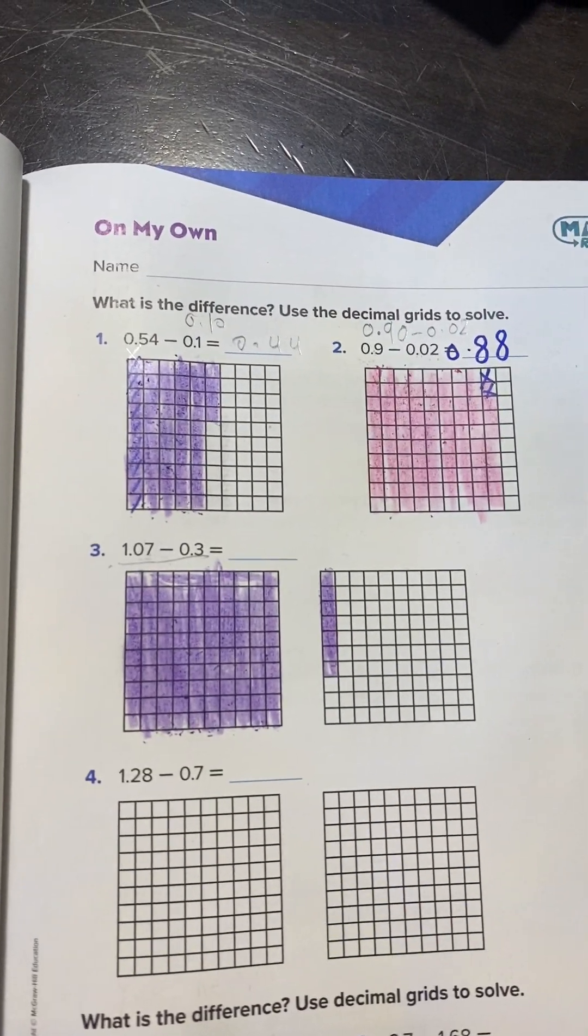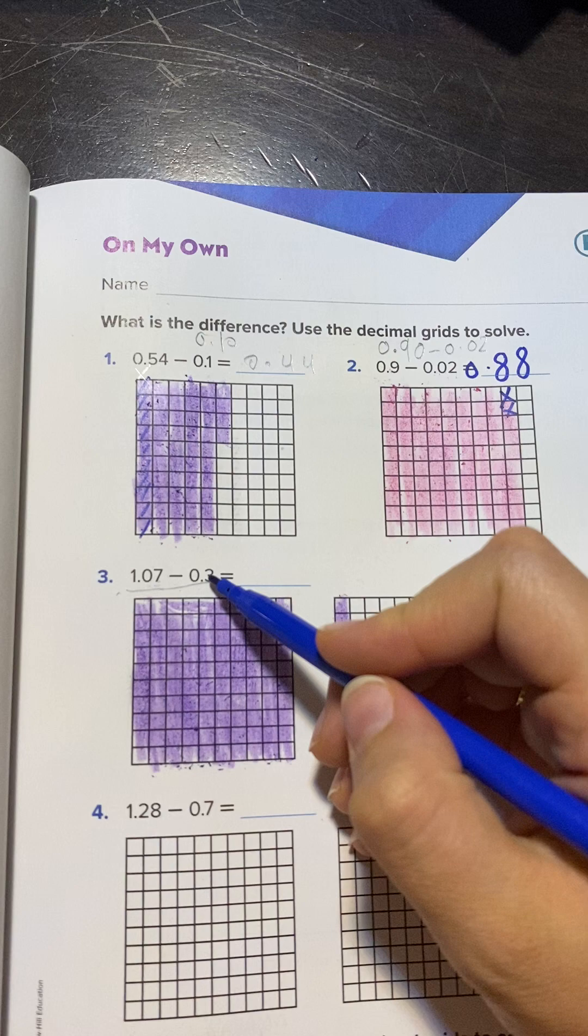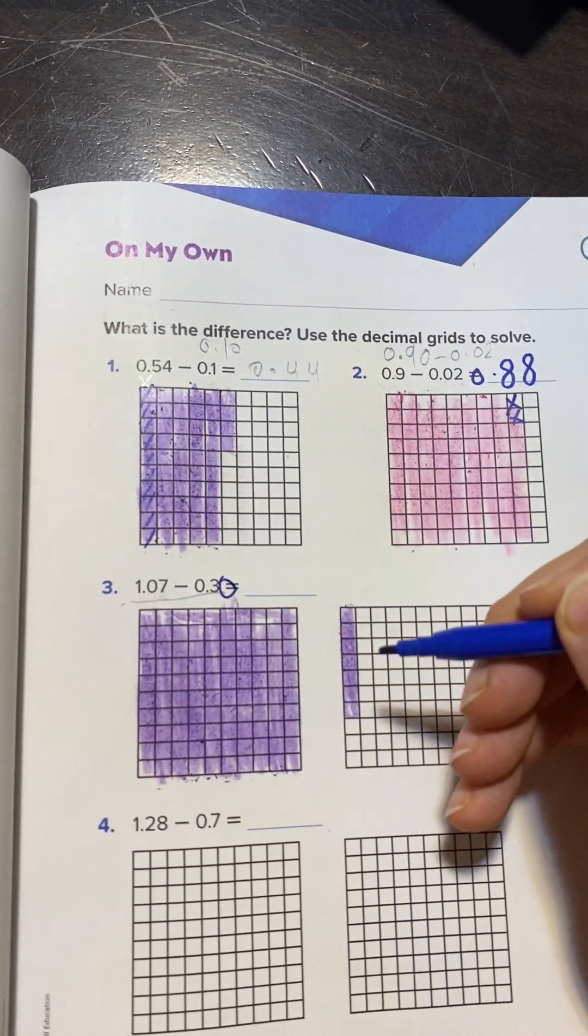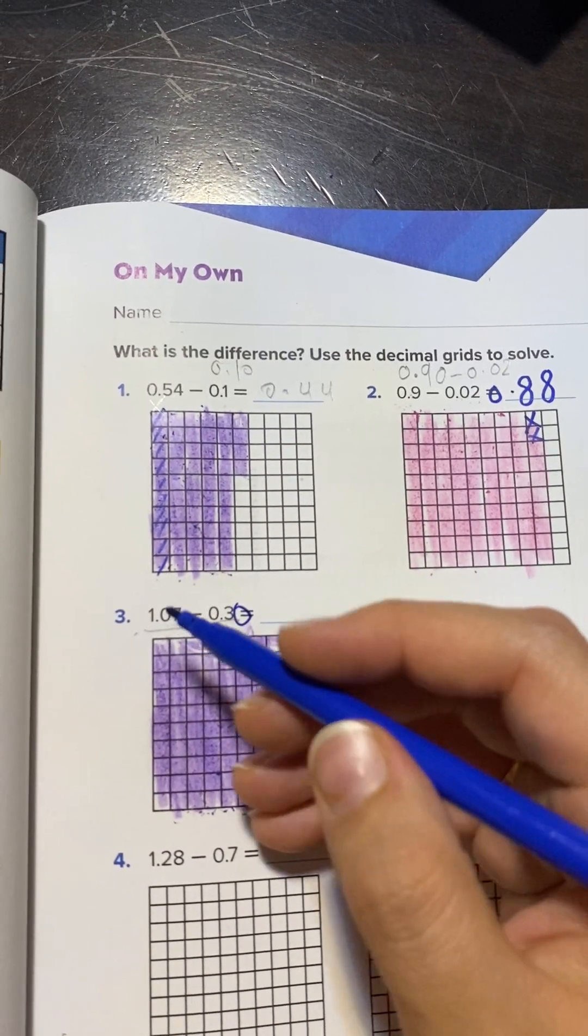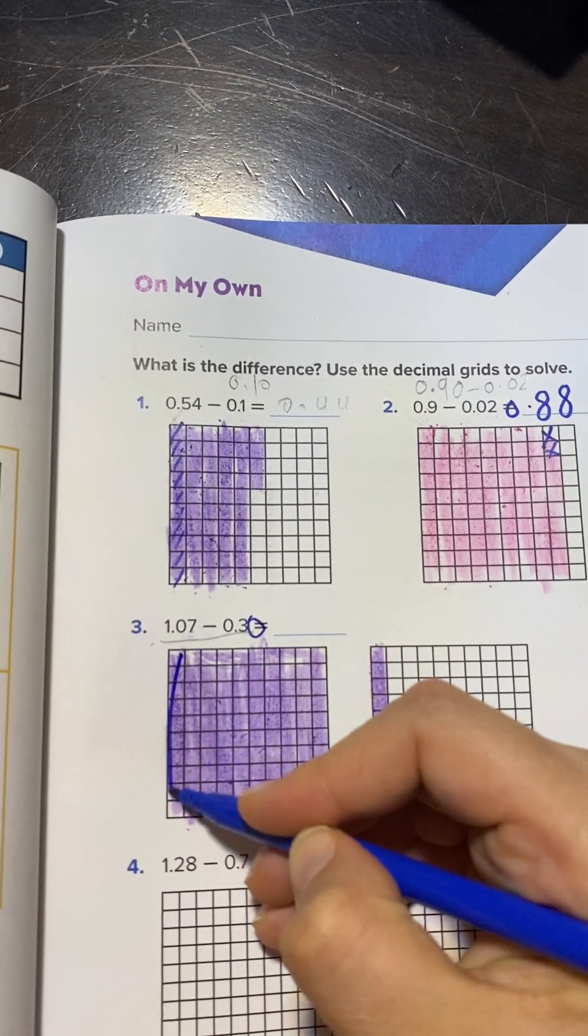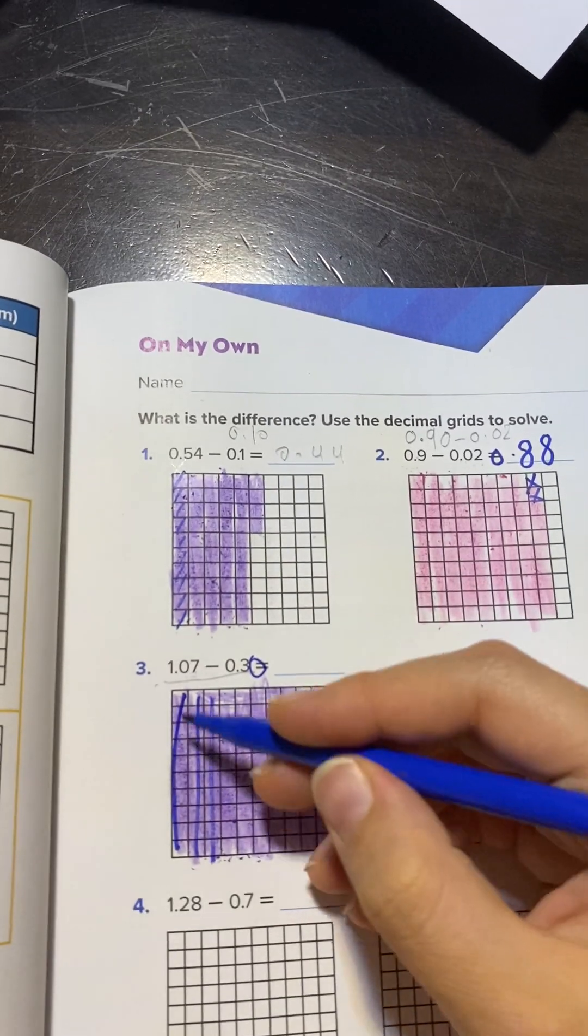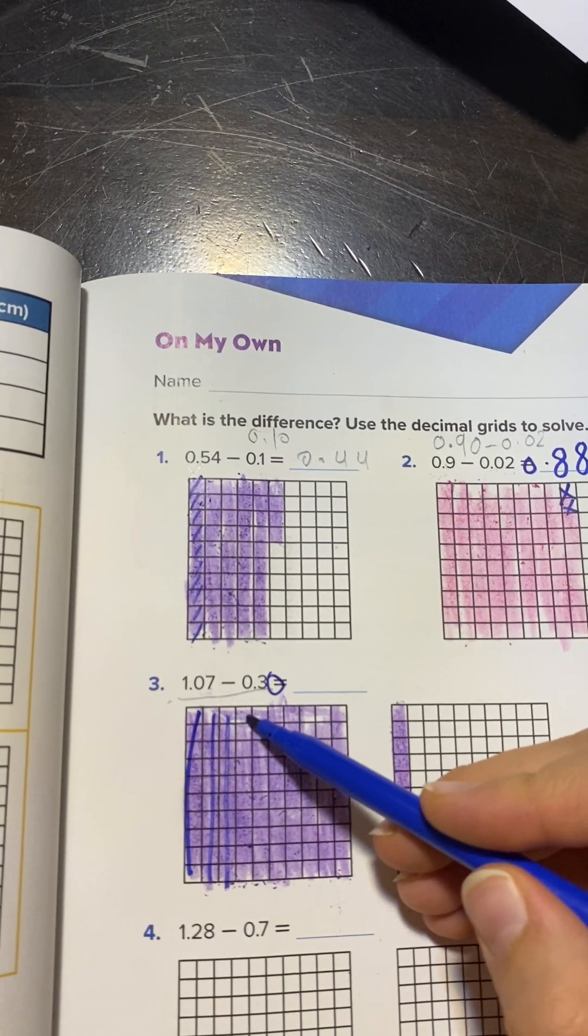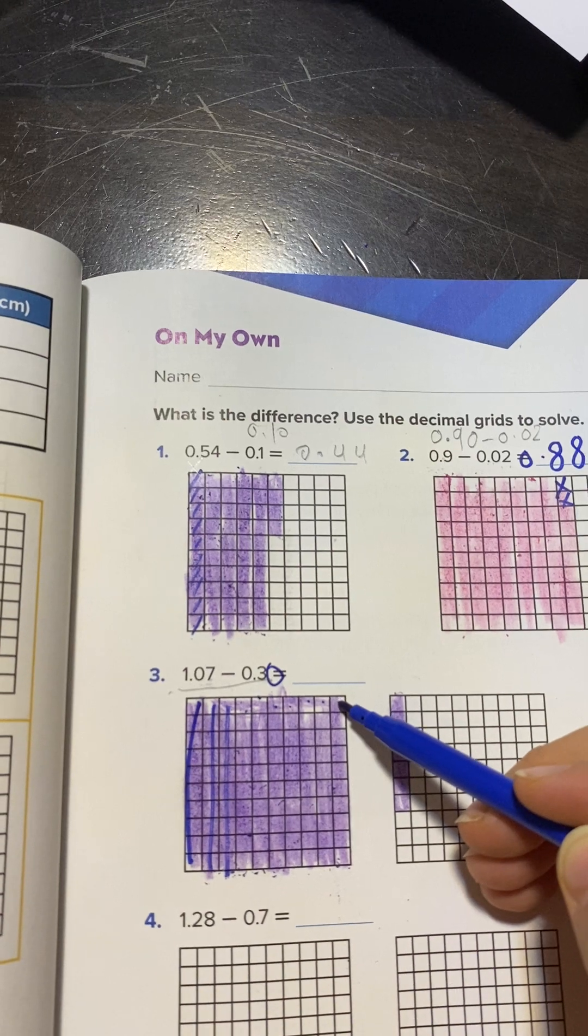Now how many will I cancel or erase? Three. But this one is one digit, and this one has two digits, so this one will be 0.30. So how many columns will you erase? You will erase: 1, 2, 3. How many left? 10, 20, 30, 40, 50, 60, 70, 7.